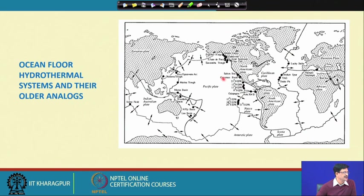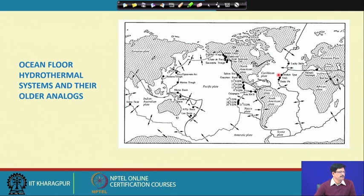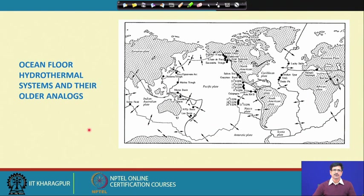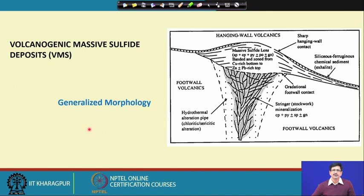There are geothermal systems such as the Salton Sea geothermal system and many others associated with back-arc settings, for example the Lau Basin. This entire ridge system — whether on mid-oceanic ridges with active rifting or on back-arc settings — represents active sites of hydrothermal activity resulting in hydrothermal mineralization. They are observed as black smokers and sulfide chimneys forming on these hydrothermal vents, very similar to the mineralogy of the deposits we are about to discuss.